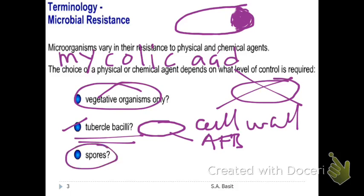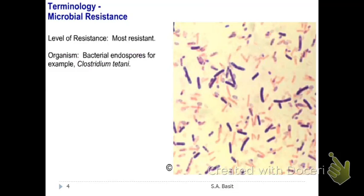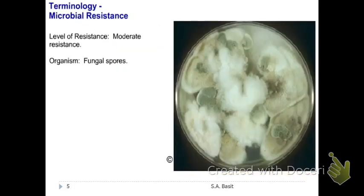An example of bacteria with endospores is Clostridium tetani — their level of resistance is most resistant. We also have fungal spores. Fungal spores are different from bacterial endospores: fungal spores are not for survival in extreme conditions but are usually for germination. So endospores are highly resistant, while fungal spores are moderately resistant.